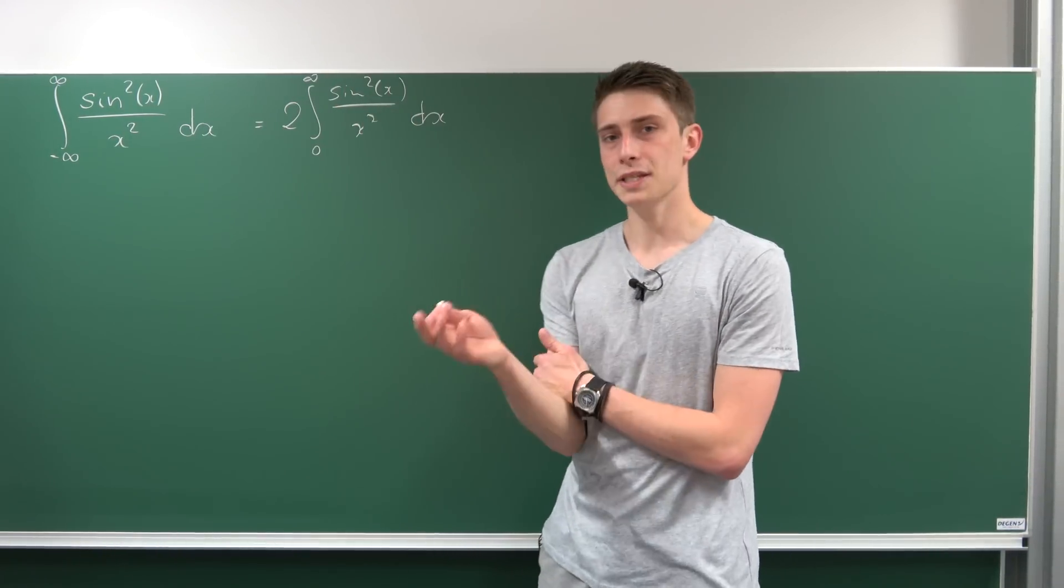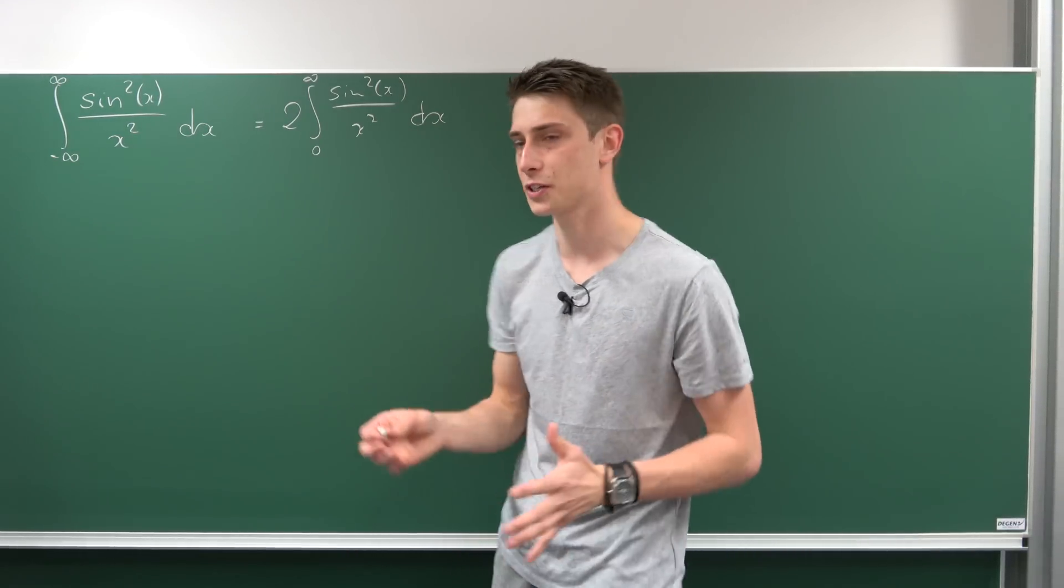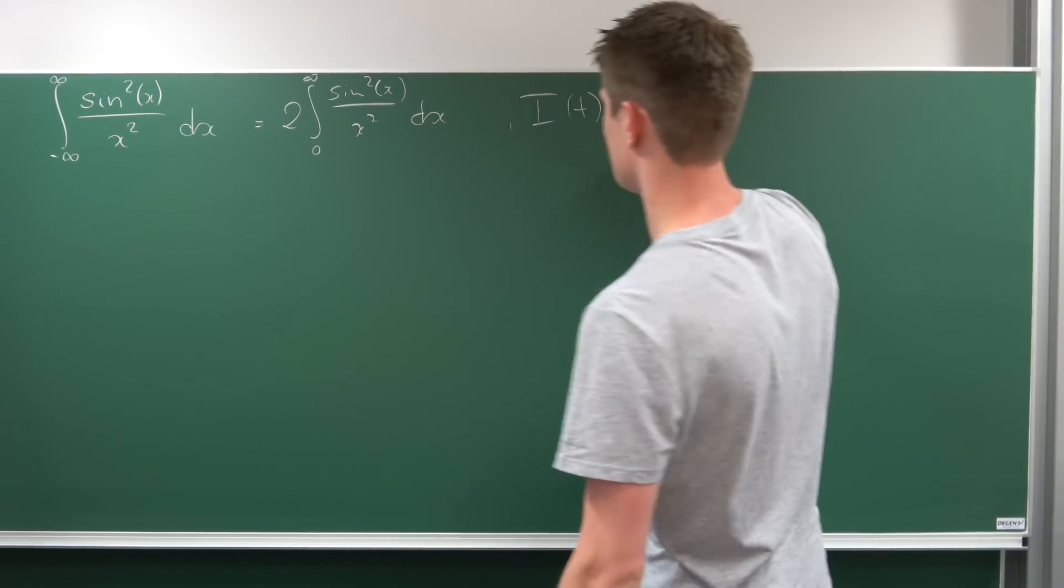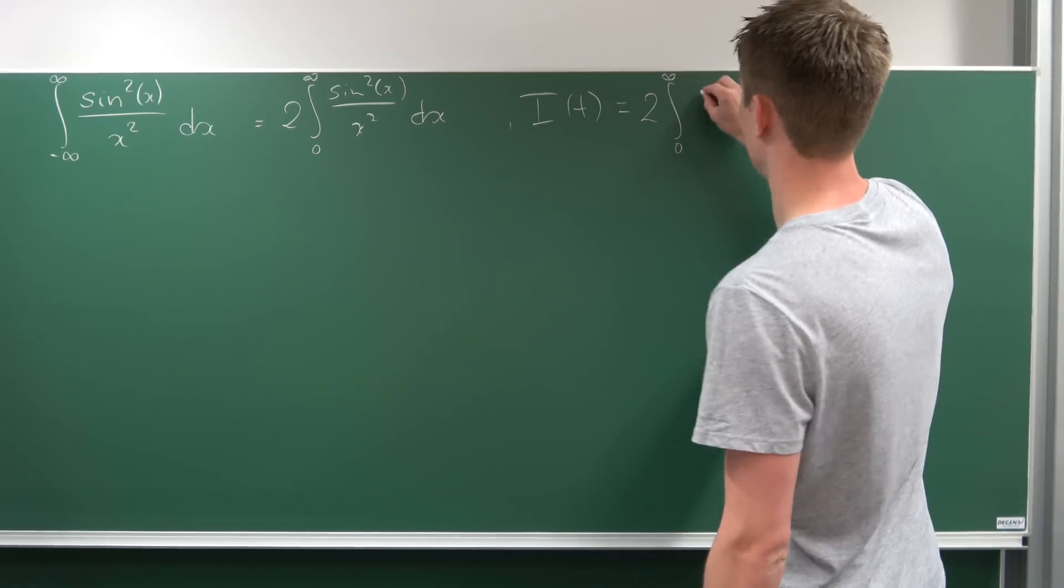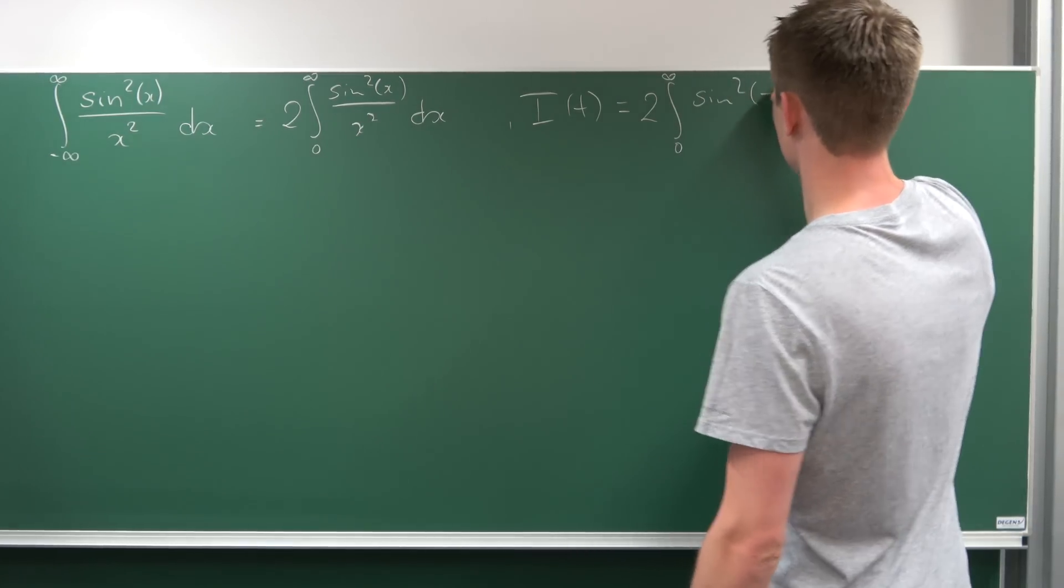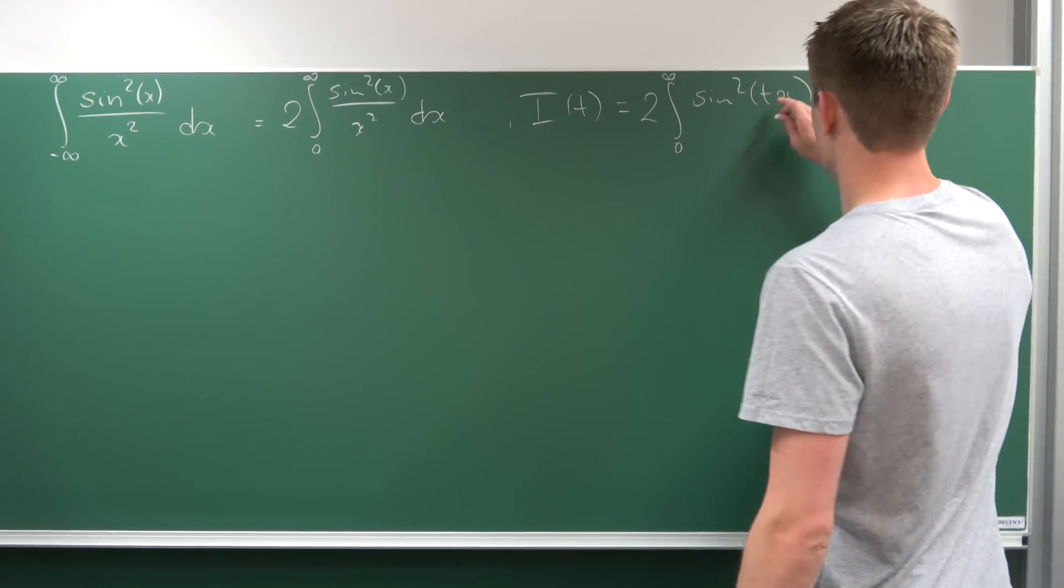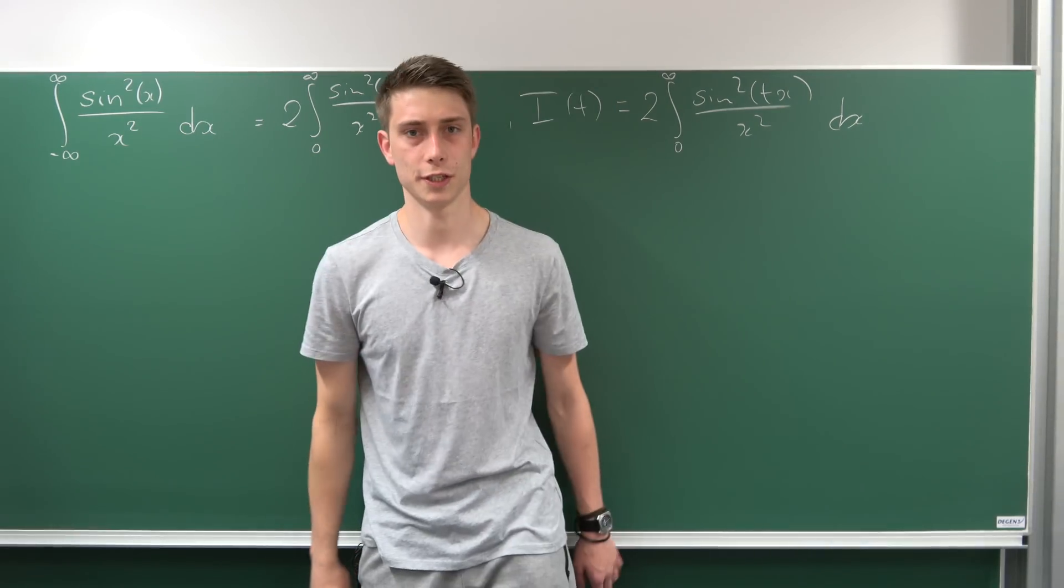But we're missing something - we don't have a time dependent factor. So let's define a new integral: I(t) equals 2 times the integral from 0 to infinity, and now we're bringing in a little factor of t (t is strictly positive) into here, over x² dx. Now we can work with this.